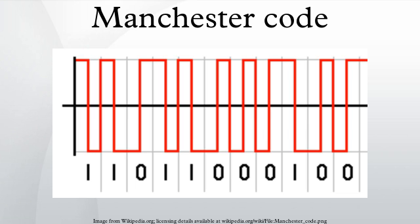Transitions at the period boundaries do not carry information. They exist only to place the signal in the correct state to allow the mid-bit transition. The existence of guaranteed transitions allows the signal to be self-clocking.